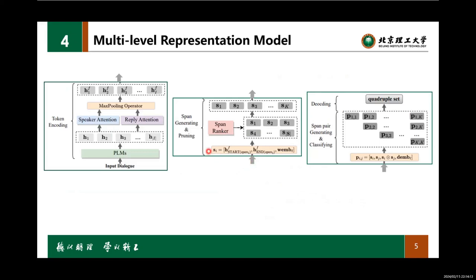Based on STS, we propose a simple and efficient multi-level representation model, MIM. First, MIM uses a pre-trained language model, such as RoBERTa-large, to model contextual information, and uses a self-attention mechanism to model the speaker and reply information. Second, MIM obtains a span list by enumerating all spans. In order to improve running efficiency, we trained a span ranker to prune the span list. Finally, MIM constructs a span pair matrix by enumerating all pruned spans and decoding all quadruples.